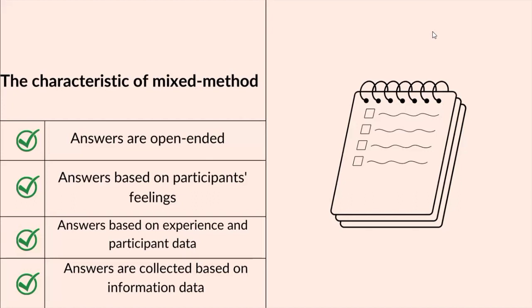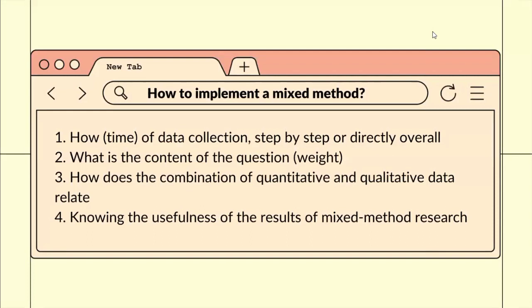First, the answers are open-ended. Second, the answers are based on participant feelings. Third, answers are based on experience and participant data. And the last, answers are collected based on information data. To implement a Mixed Method: first, consider how type of data collection — step by step or directly overall. Then, what is the content of the question. Third, how does the combination of quantitative and qualitative data relate. And the last, knowing the usefulness of the results of Mixed Method research.